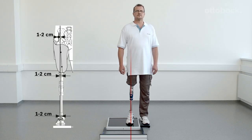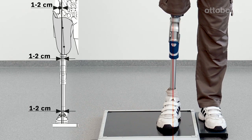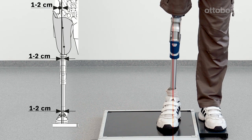Looking at the frontal view of the knee, the alignment reference line runs through the middle of the prosthetic foot, middle to outer edge of the knee, and middle of the socket.